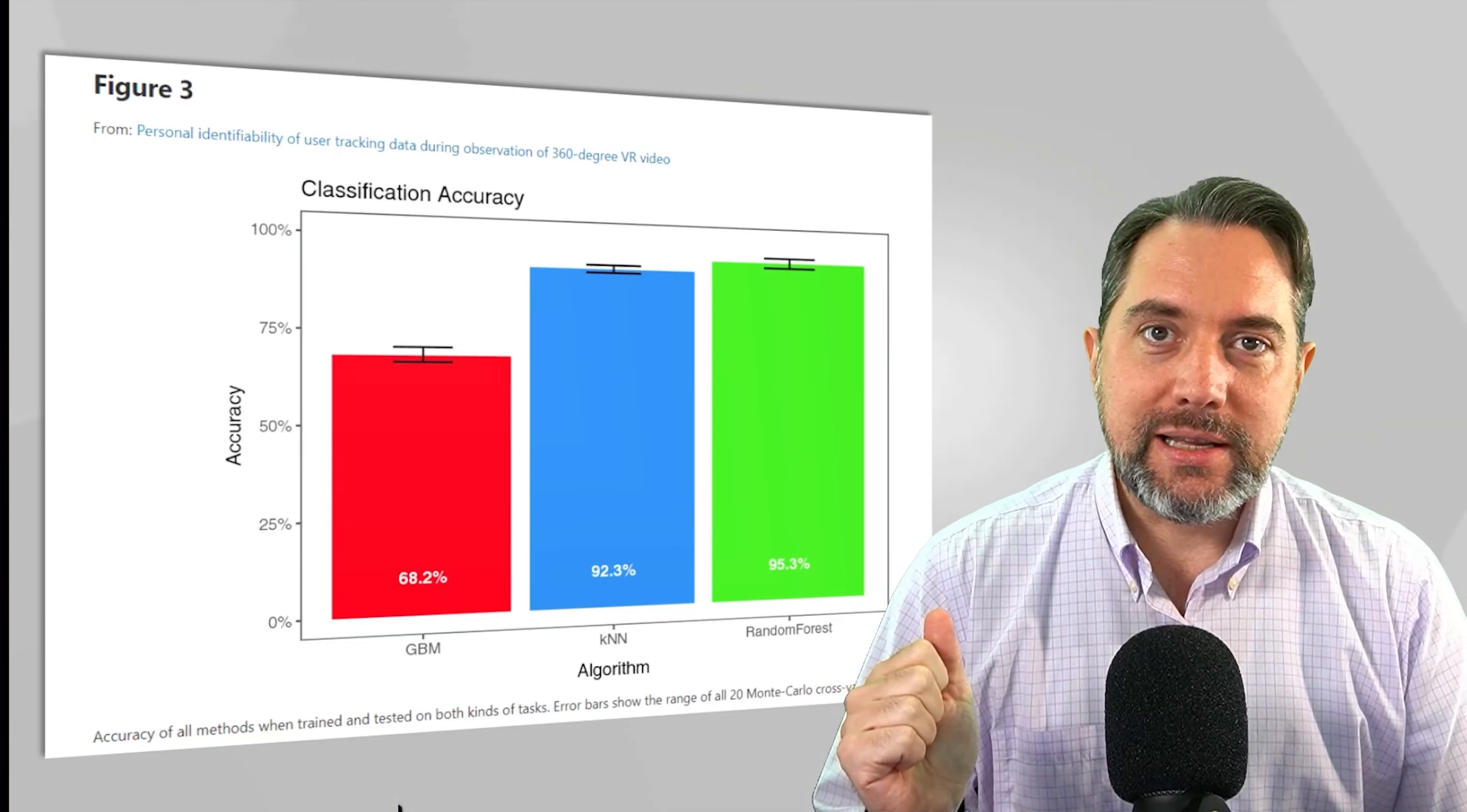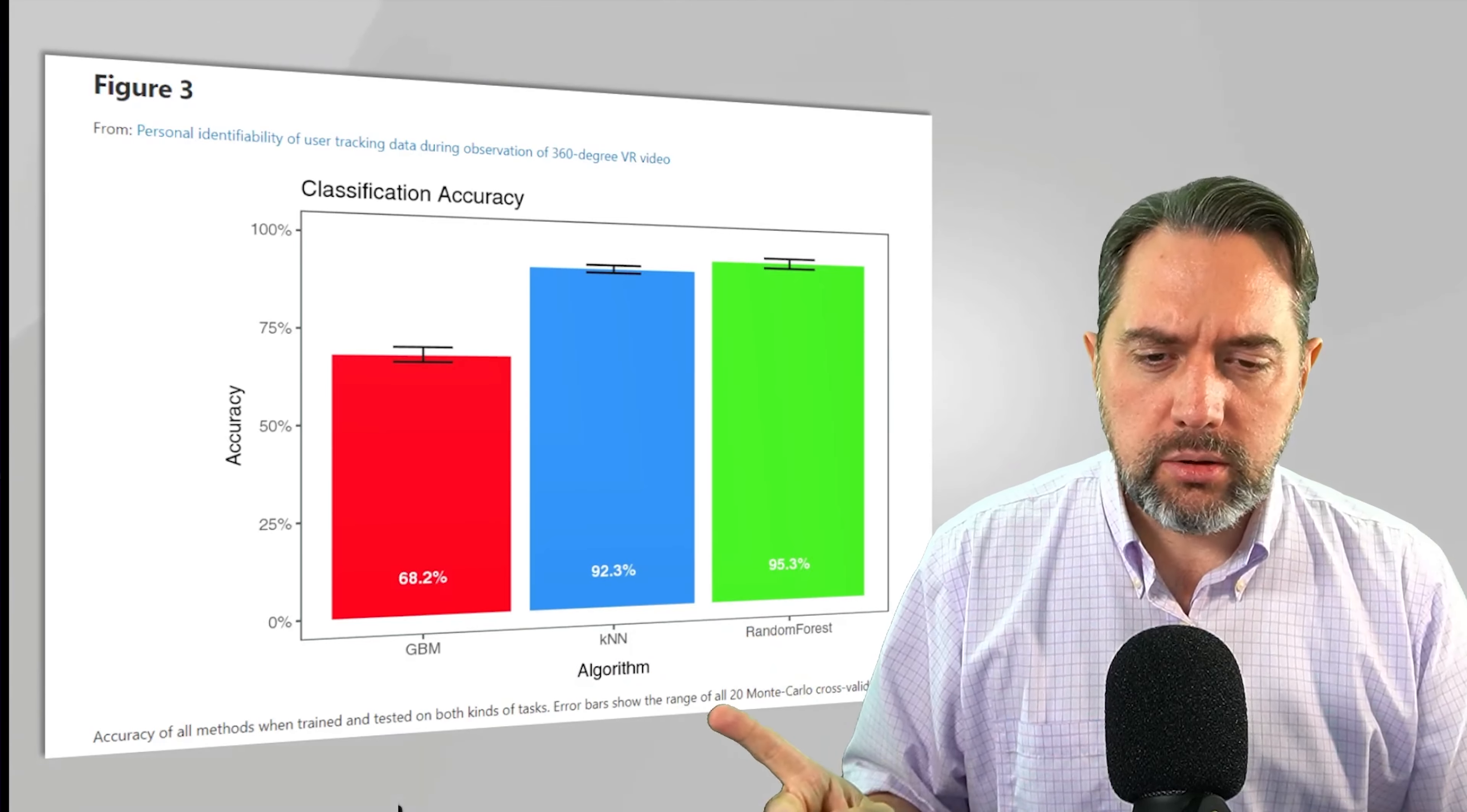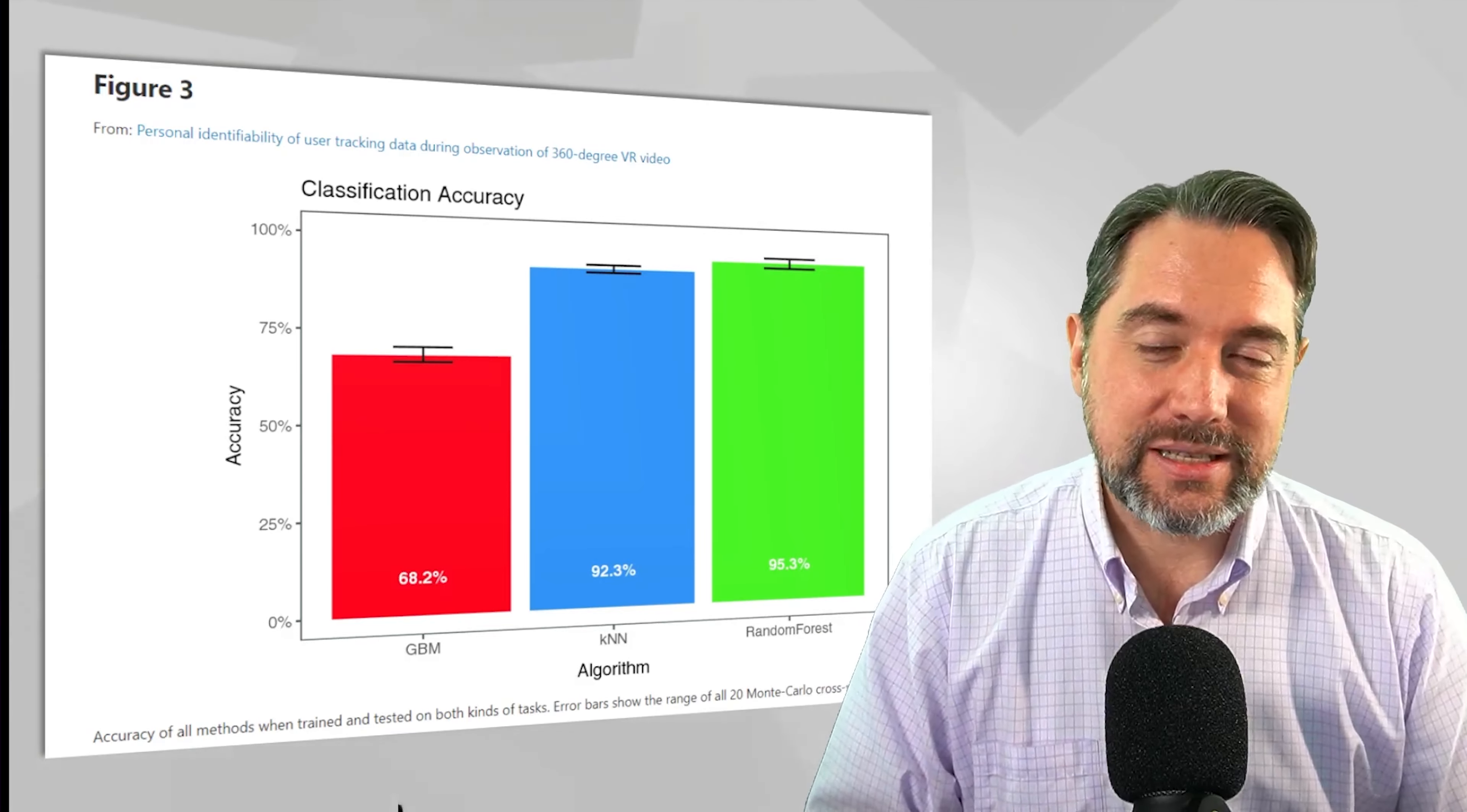Now, the study did a bunch of different ways to use machine learning and put some algorithms against this tracking data and see if they could predict the next movement, or also see if they could predict accurately the correct user using the VR. And so they used a couple of different methods, and the most accurate one was using something called Random Forest, and it got 95.3% accuracy with just using 5 minutes of tracking, head tracking, body tracking data. And this is people that came in to a museum to use a, to participate in the study and watch 360 degree video and do some kind of surveys inside of VR.